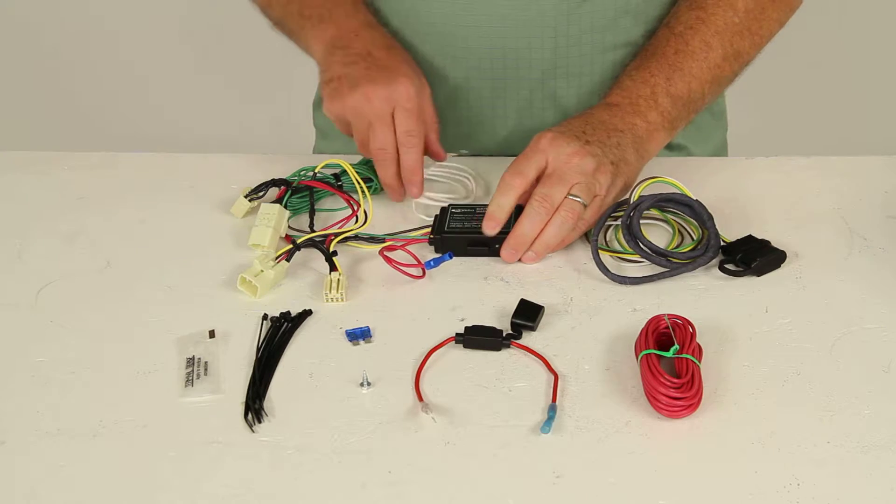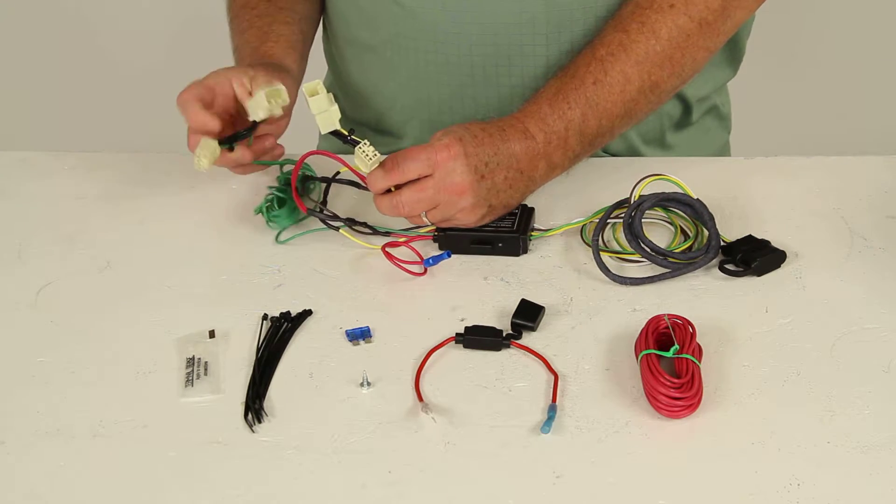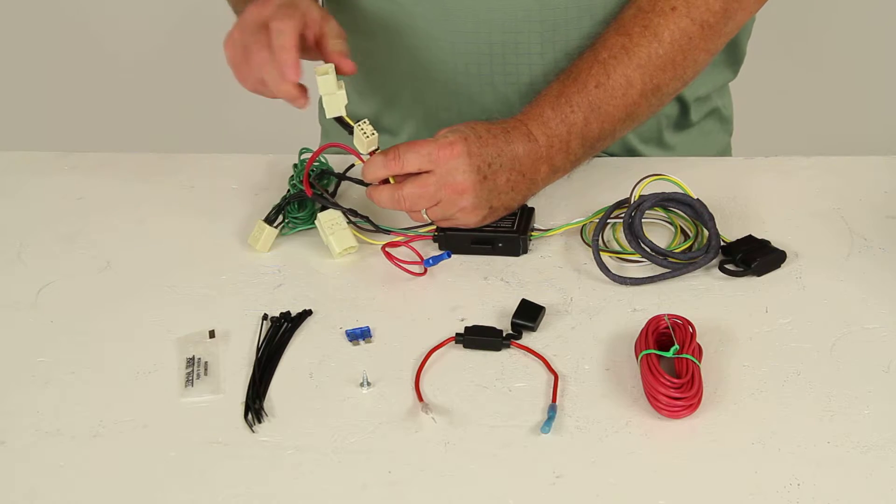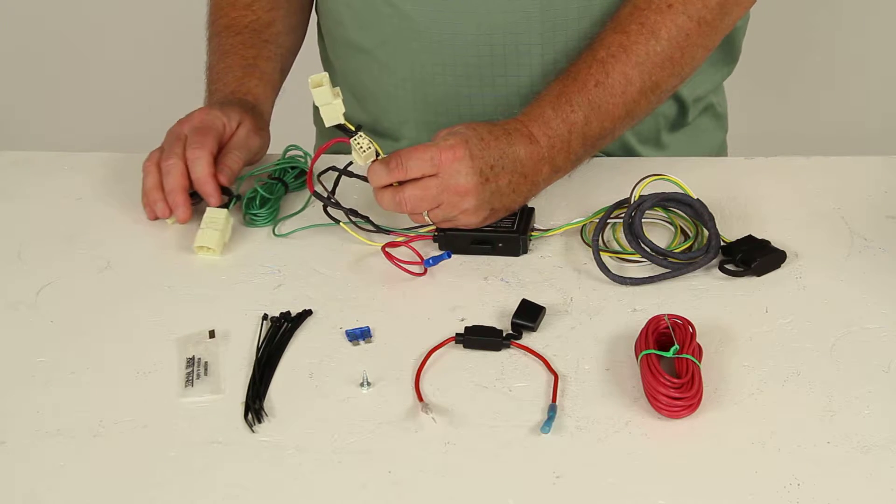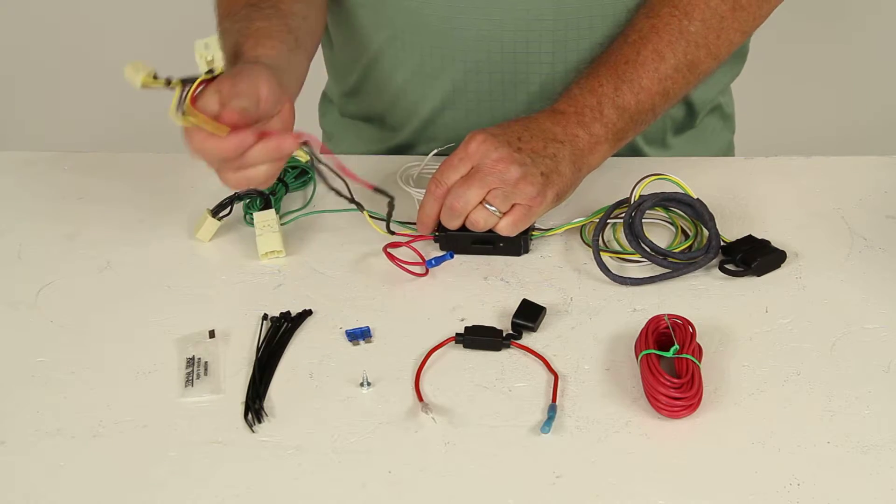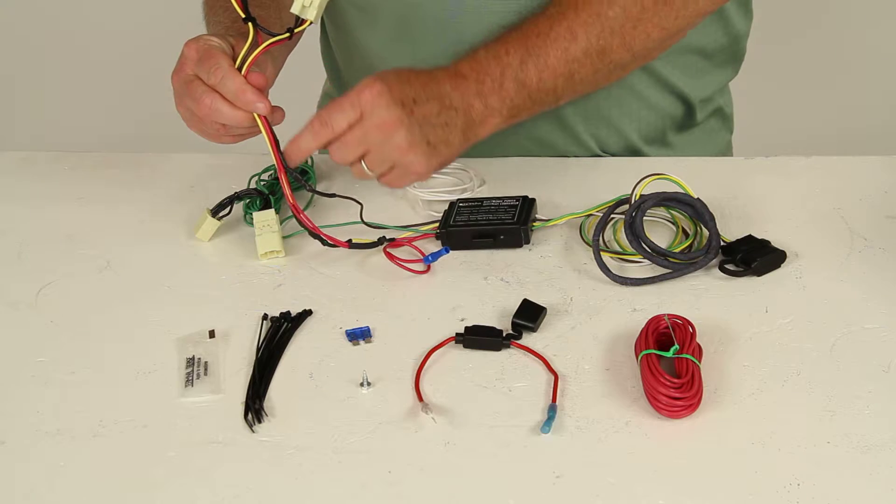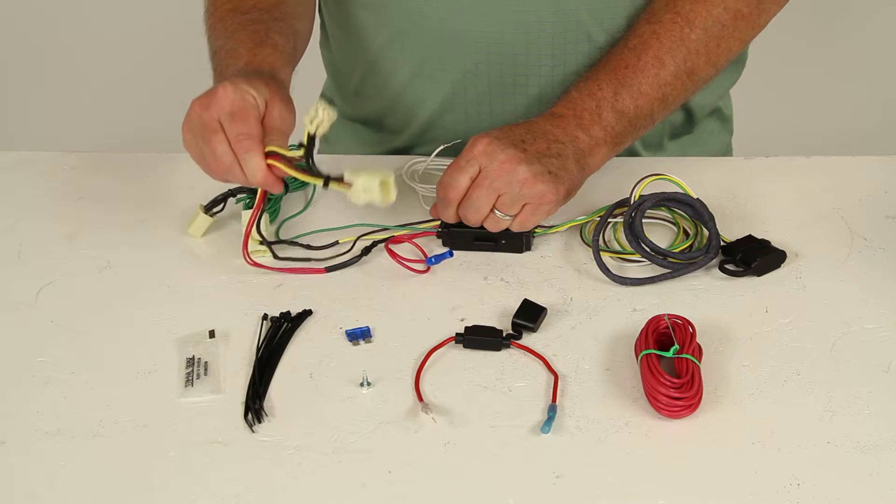So basically what you would do is when you go to install this, you go to the rear of the car and these connectors right here on these wiring will connect to the back of your tail lights. So when you disconnect your tail lights, these will plug into them. And basically this section here or this portion of the connectors with the yellow wire in it, this would be for the driver's side.